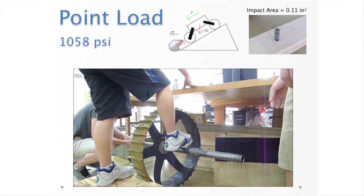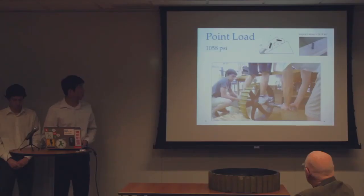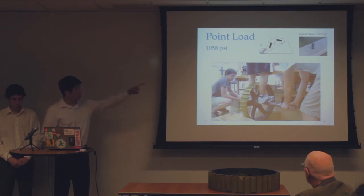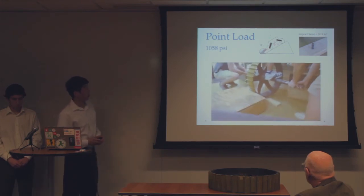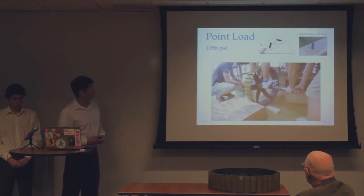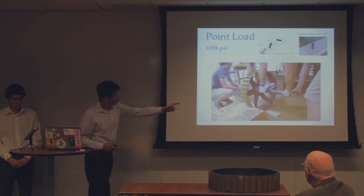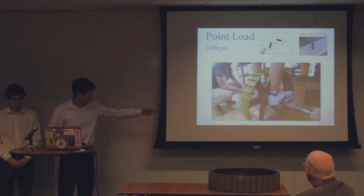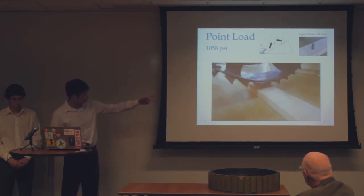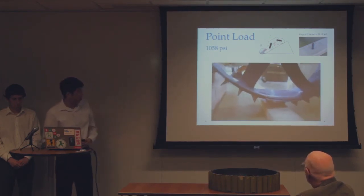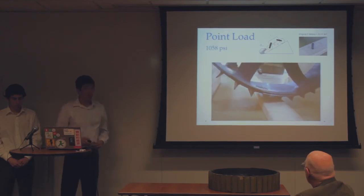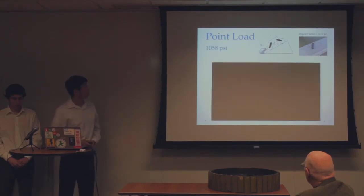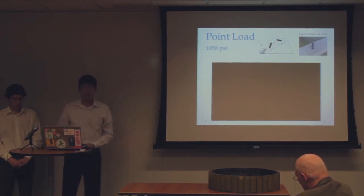Here's the point load. It's kind of similar to the spoke load, except if it were to fall onto a pointy rock. There was our pointy rock. It is the head of a screw. You can't see it very well, but we loaded it up similarly to how we did the spoke load. There is the screw head underneath there. We calculated the pressure for the point load to be around 1058 psi.